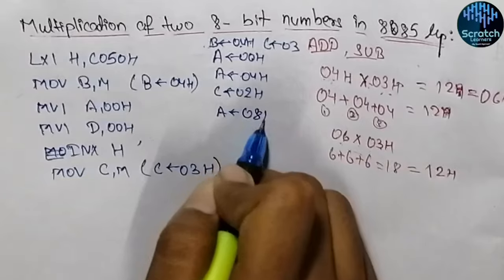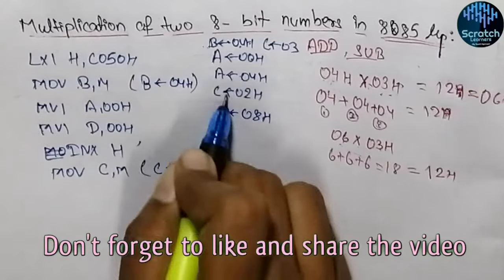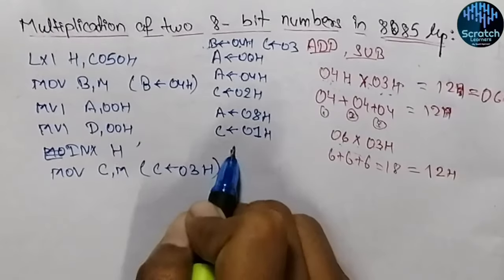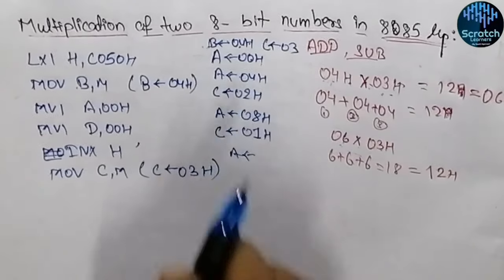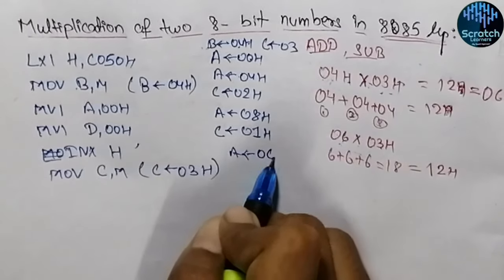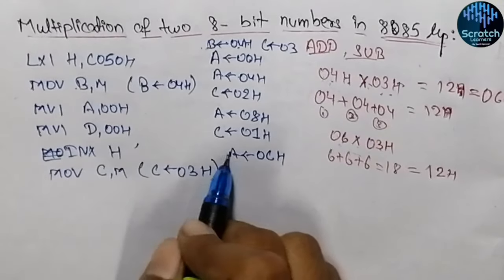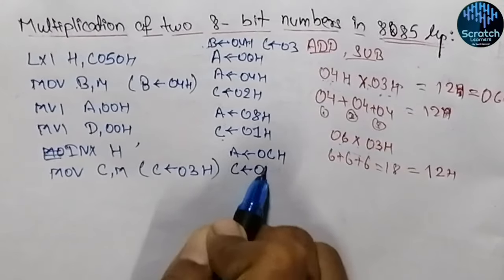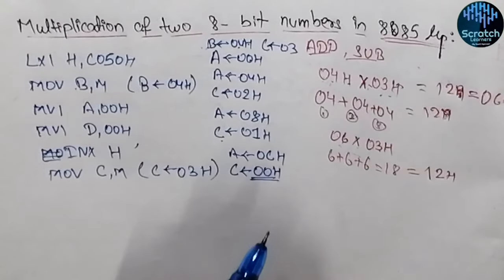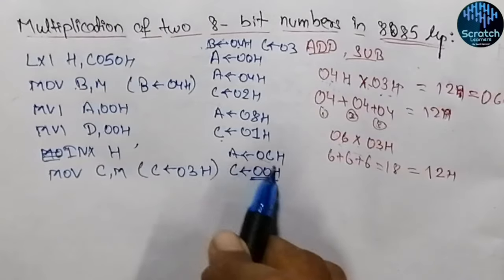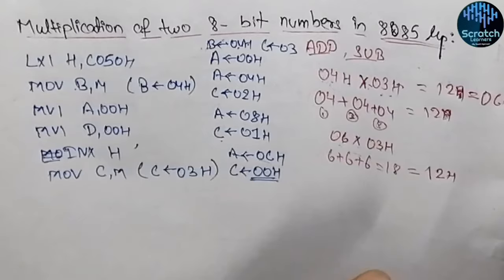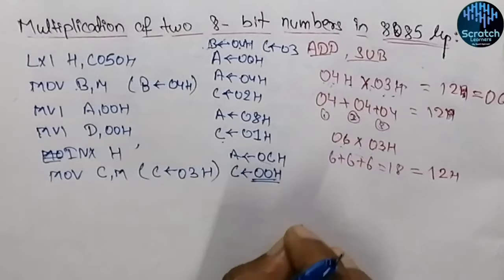Now again we will add the content of B with register A, so it will be containing 08 hex. And again simultaneously, the content of register C will be decremented to 1. Then in the next part, 08 plus 04 hex — this will give us 12 in decimal, but in hexadecimal we will be having 0C hex. And simultaneously, the content of C register will be decreased to 00 hex. So now you can see register C is containing 00 hex, which means when the content of C register becomes 00 hex, the multiplication is completed. So this will be the general idea.